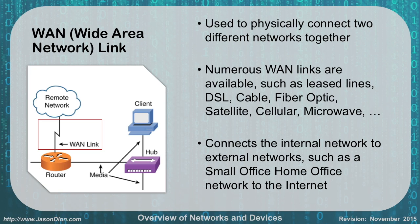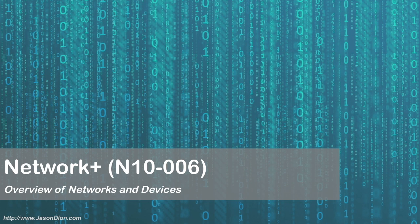We can connect our internal network to an external network using these WAN links. For instance, if you have a small office at home and want to connect to the internet, you have to have a WAN link. All of us in our homes have some sort of internet connection — whether that's a cable modem or a fiber optic modem — and those are both good examples of WAN links. And that is the overview of our network devices.